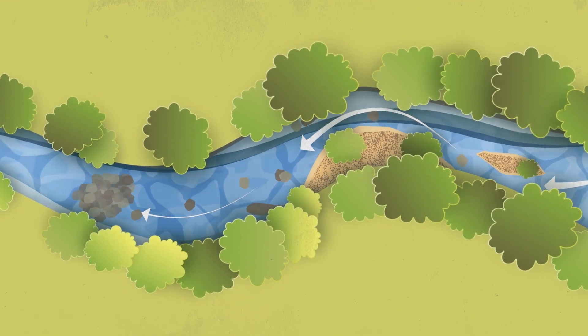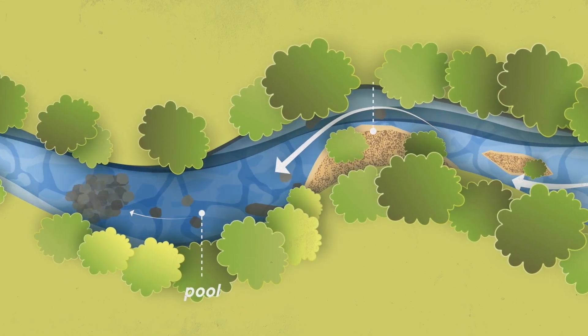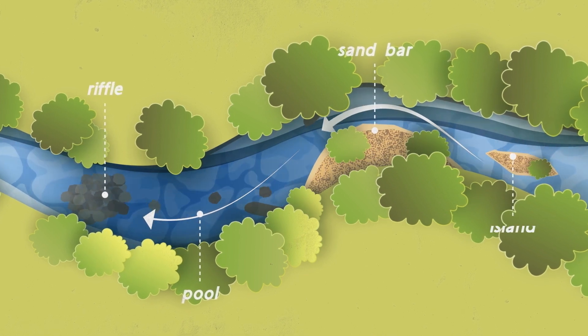Movement of sediments during floods creates diversity of river features such as pools, sandbars, riffles and islands.